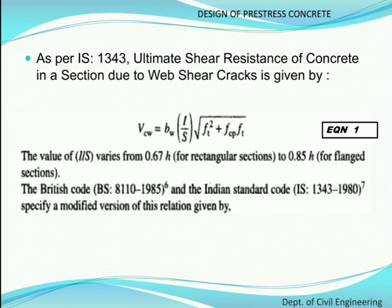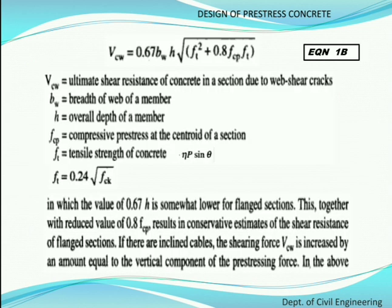In this equation, the value of I/S varies from 0.67 times h for rectangular sections to 0.85 times h for flanged sections. The Indian code and British code have specified modifications to this formula. Applying those modifications gives Equation 1b: Vcw = 0.67 × bw × h × √(ft² + 0.8 × fcp × ft).